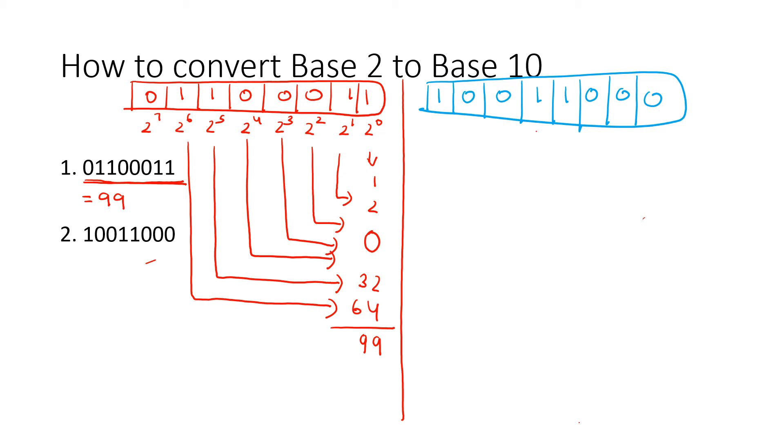These all are 0, so we don't even need to write this, but I'll just write 2 raised to power 0, 2 raised to power 1, 2 to the power 2. But our stuff is going to start from this number, which is 2 raised to power 3, 2 to the power 4, 2 to the power 5, 2 to the power 6, 2 to the power 7.